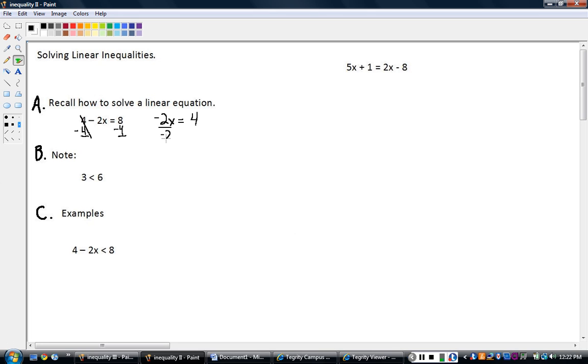And then I divide by the coefficient of x, which is negative 2 in order to isolate x. Negative 2x divided by negative 2 is x. So I get x equals 4 divided by negative 2, which of course is negative 2. That's easy, right? So hopefully you remember how to do that because these inequalities are going to go a lot the same way. It's going to be very similar.